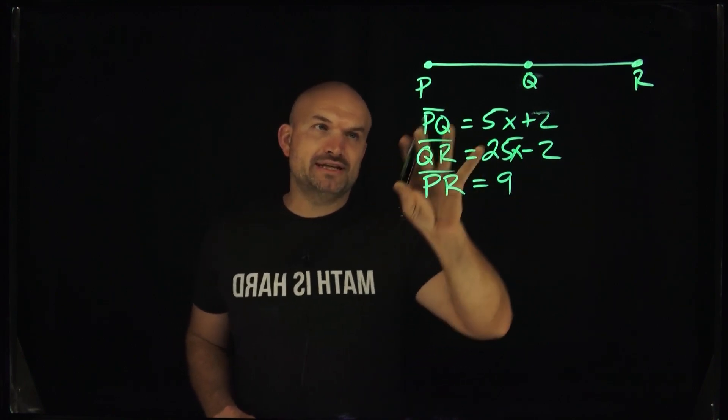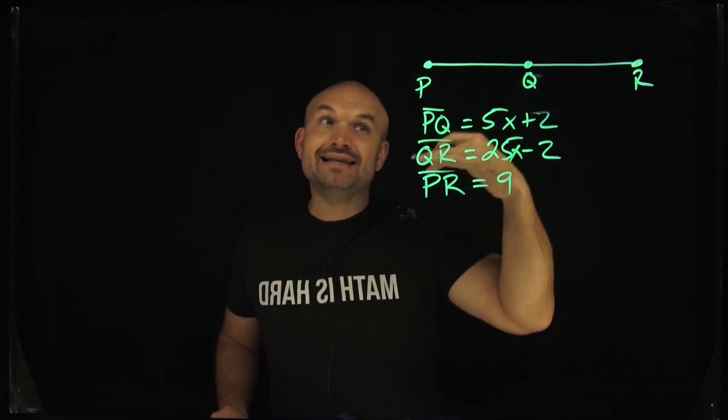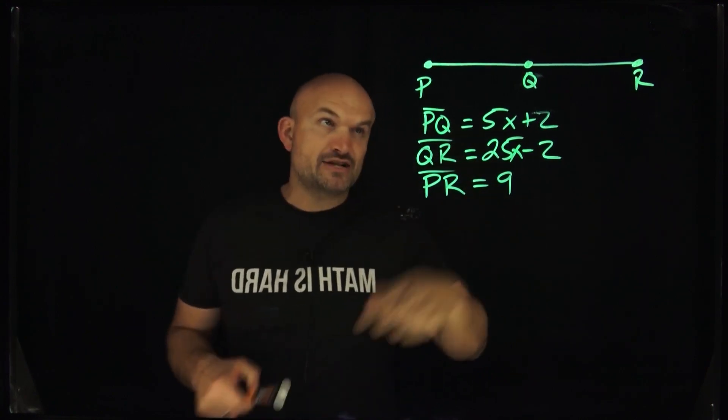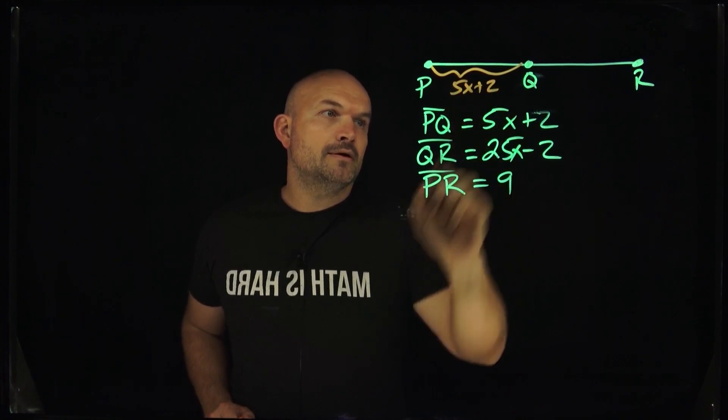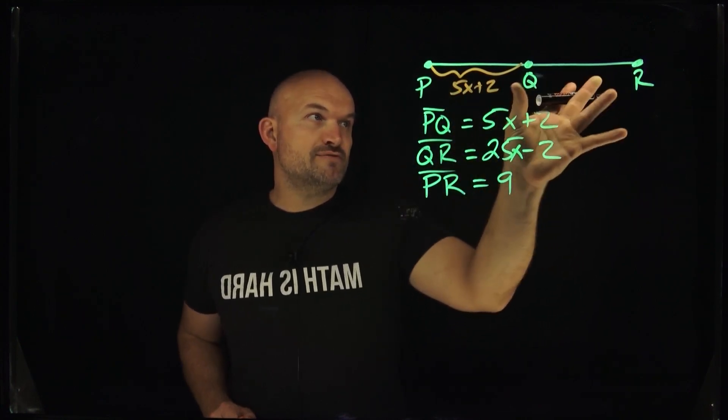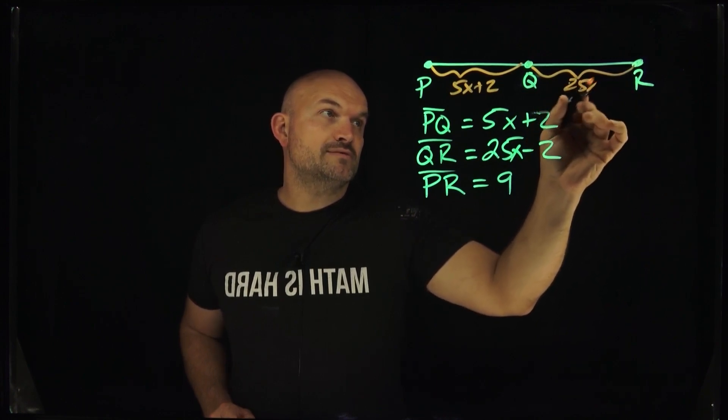What we need to understand is what each of these actually represents. We have PQ, which is 5x plus 2. What I like to do sometimes is let's go ahead and write that in. So we have 5x plus 2, and then we have 25x minus 2, which is from Q to R.